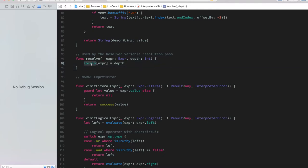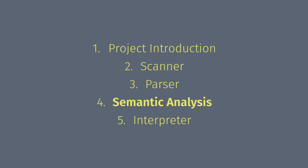We'll look at how this is used in the interpreter in the next episode. To summarize: we just have a class that follows the visitor pattern, and on every node it decides whether to create more scopes or visit the statement recursively. At the end of the day, the only thing it gives the interpreter is information about how many scopes to jump to get the correct value.